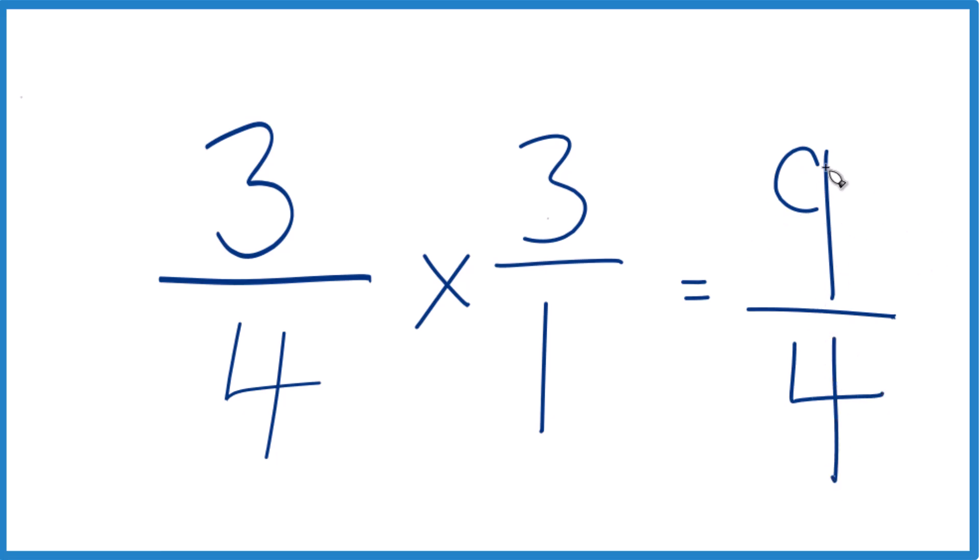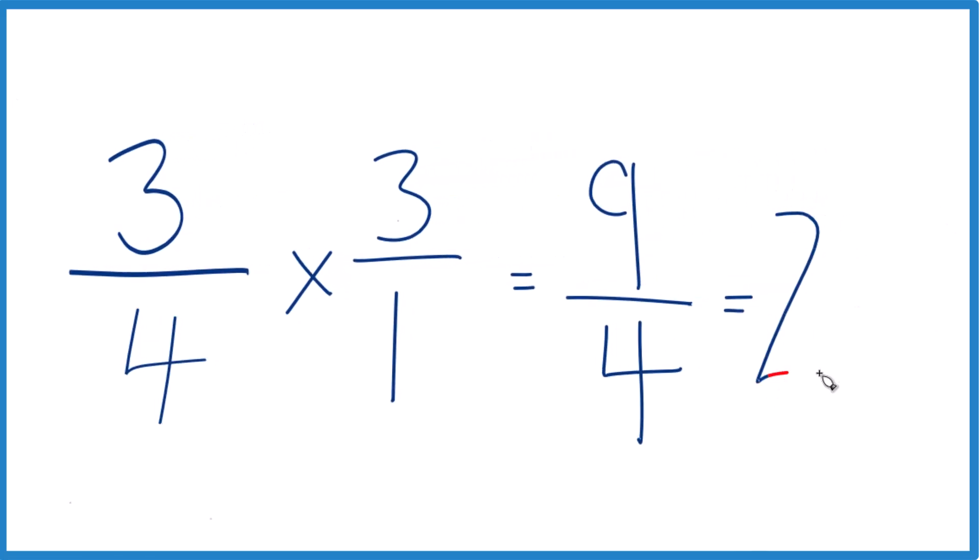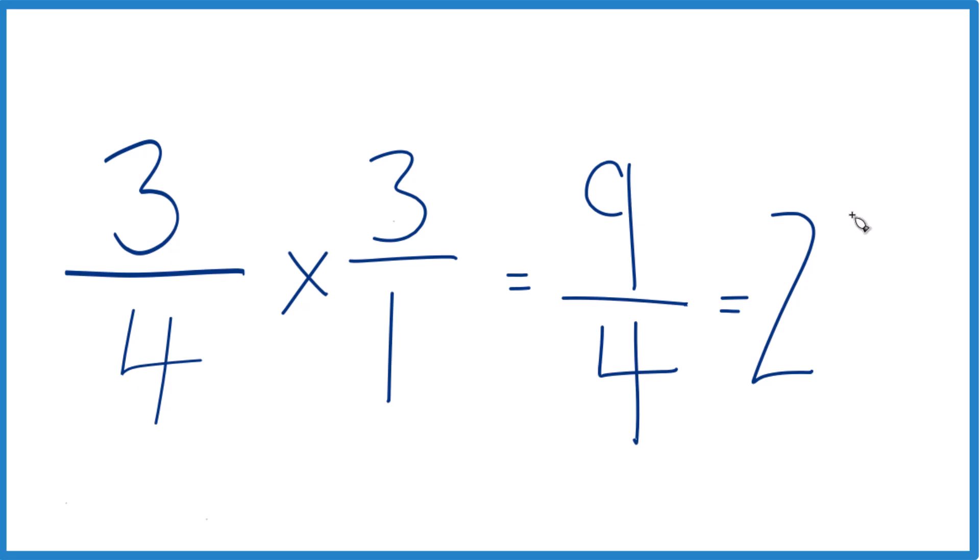Nine-fourths isn't really that useful if you're cooking, but we can change this improper fraction to a mixed number because four, two times four, that gives us eight with one left over. Then we bring the four across, and we have two and one-fourth.